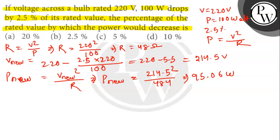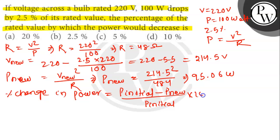Now, we will calculate the percentage change in the power as follows. The percentage change in the power is equal to P initial minus P new, divided by P initial into 100. This will be 100 minus 95.06 divided by 100 into 100. This will be 4.94.